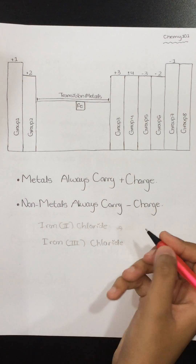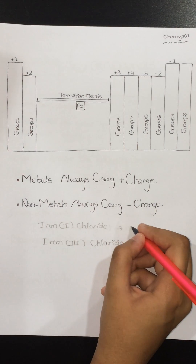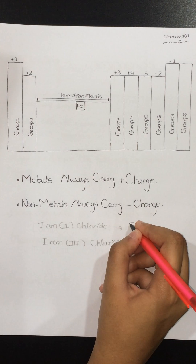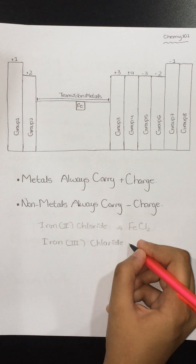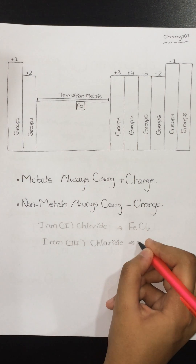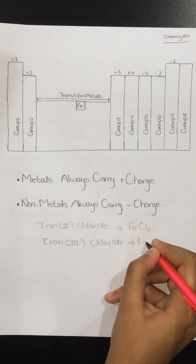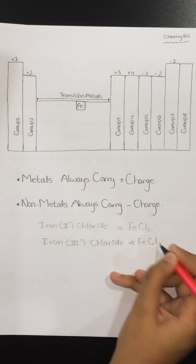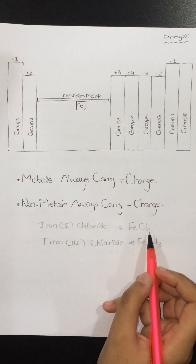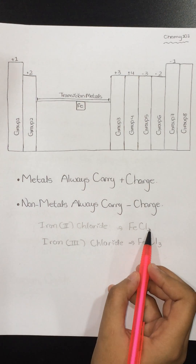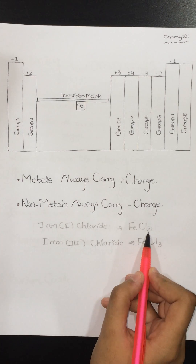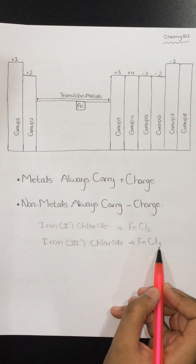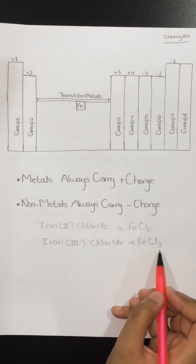It can also be given to you as a formula, like FeCl₂ or FeCl₃. From FeCl₂ you can determine that iron's charge is 2, and from FeCl₃ you can determine that iron's charge is 3.